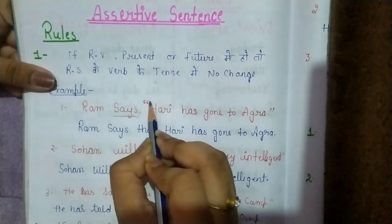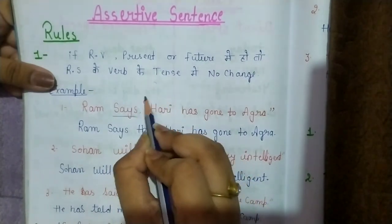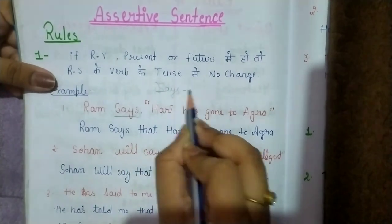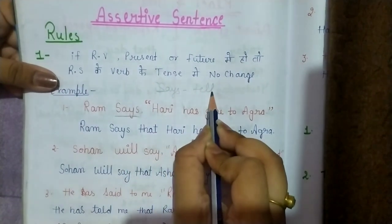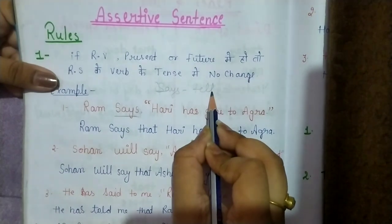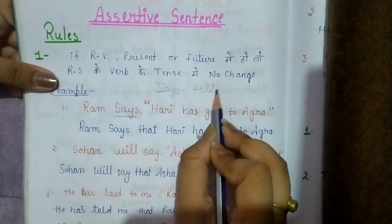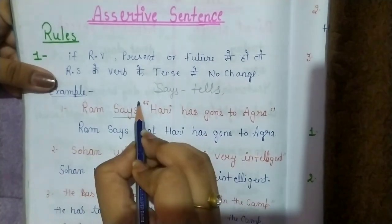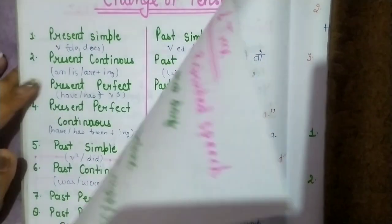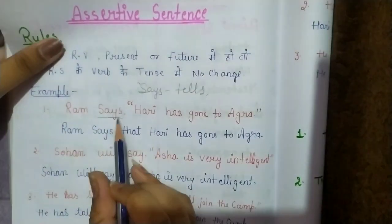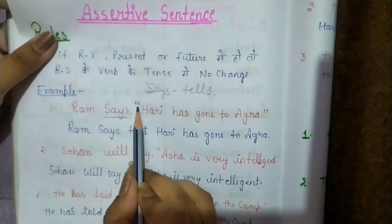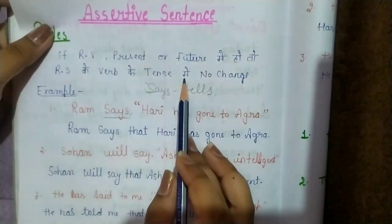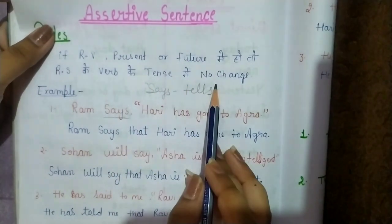If there is an object, then 'says' changes to 'tells'. If there is an object, you use 'tells'. If it is 'to me' or another object — which you will see in the options — then you make that change. So the answer is: Ram says (inverted comma) that, and in reporting speech we will not do any change.